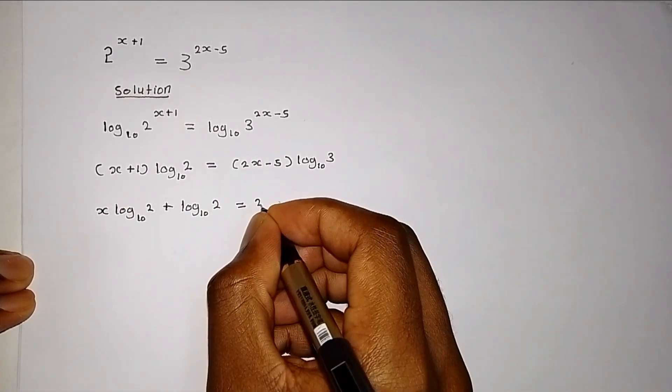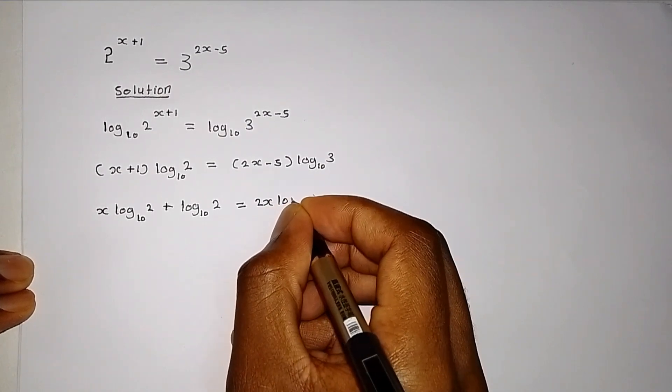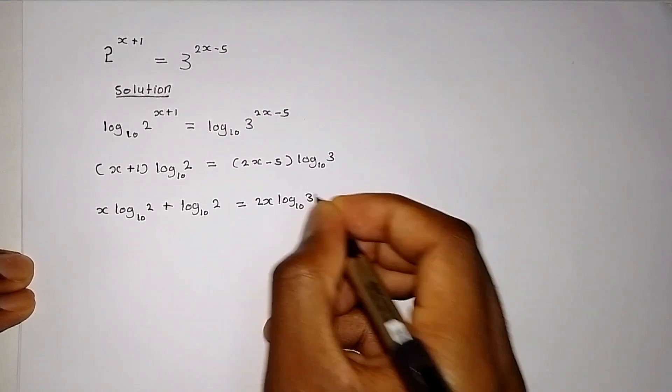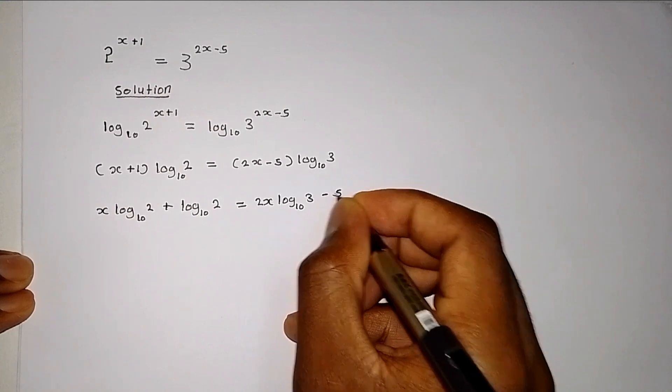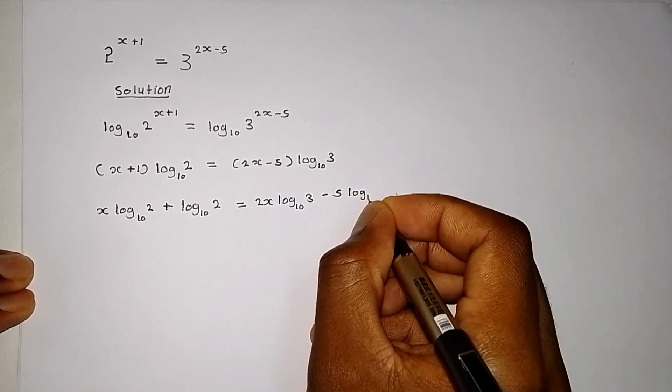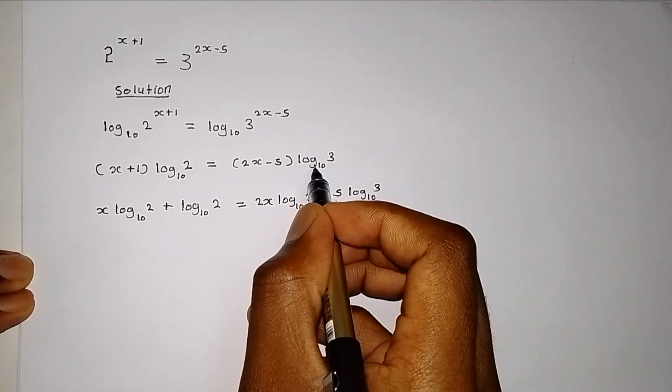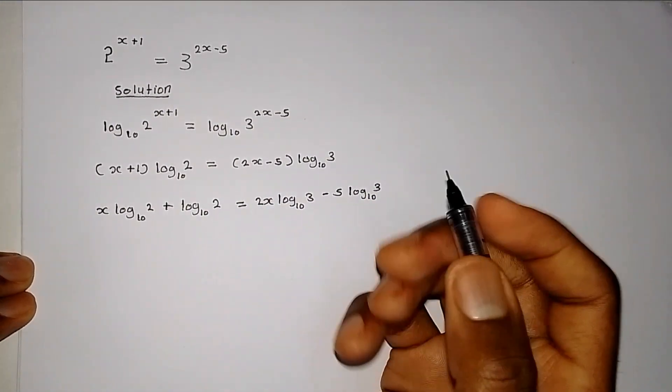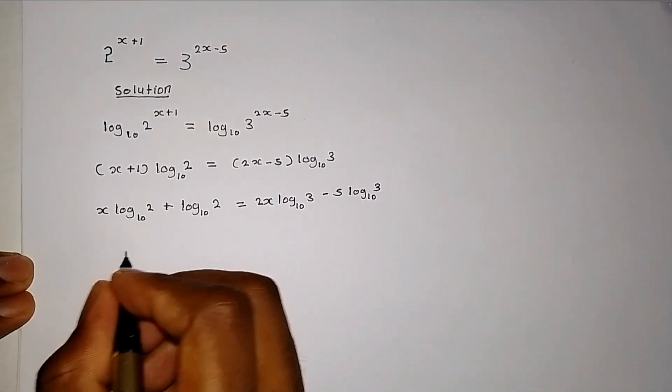Which equals to, this becomes 2x log 10 of 3 minus 5 multiplied by log 10 of 3 when we take this multiplied by that one.